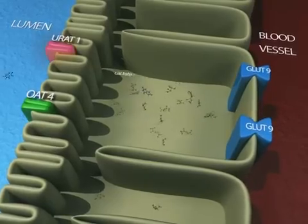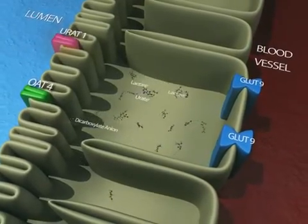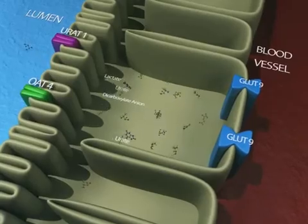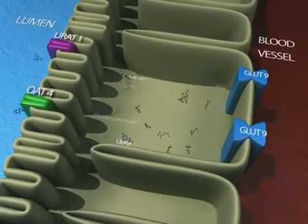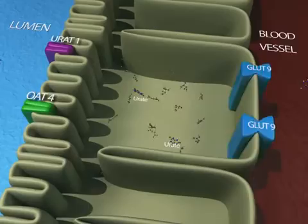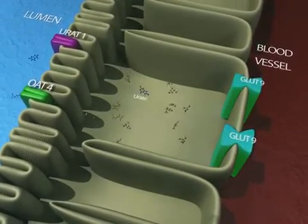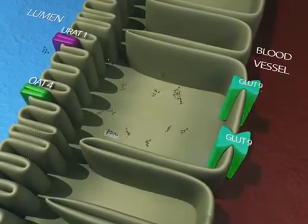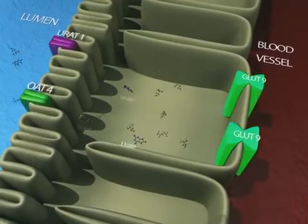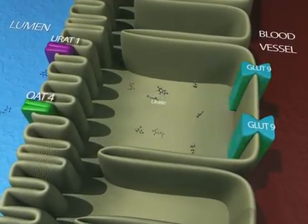URAT1 is highly urate-specific and is located on the luminal membrane of the proximal tubular epithelial cells, whereas GLUT9 is a voltage-driven urate transporter found on the basolateral membrane, where it mediates the transfer of urate out of the tubular cells and back into the circulation.